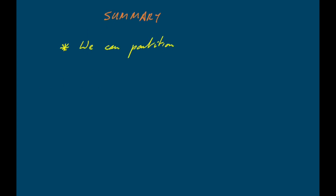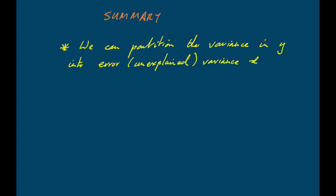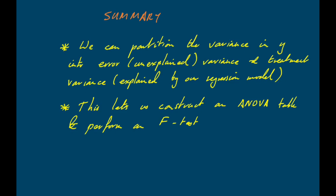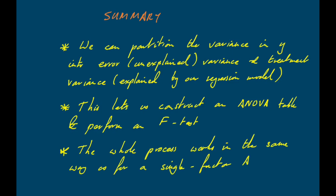To summarize: when we do a linear regression, we can partition the variance just as we do with an ANOVA — into the error variance, which is what remains unexplained after fitting the line, and the treatment variance, which is the amount of variance actually explained by our regression model. Once we've partitioned the variance, we construct an ANOVA table and perform an F test to test the null hypothesis that the slope of the line equals zero. The whole process is very similar to calculating a single-factor ANOVA.